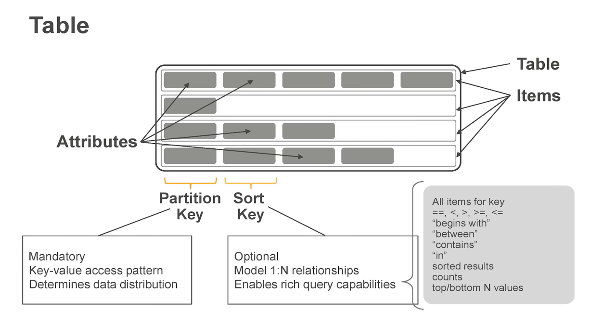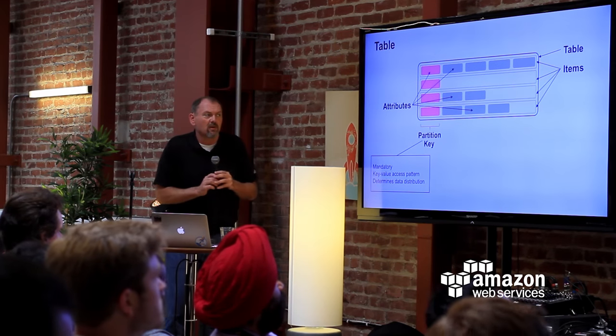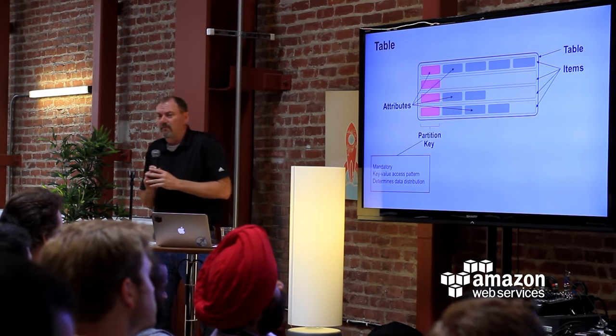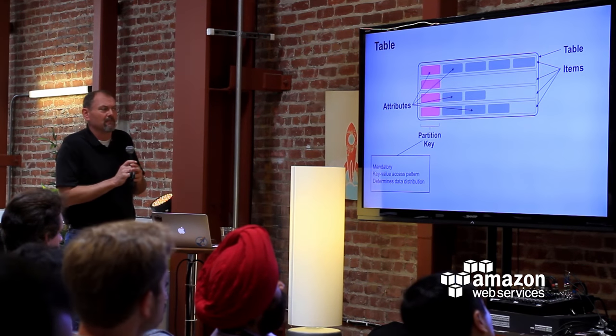DynamoDB is a backplane service — always there, always on. How do you deploy it? You log into the console, create a table, tell it how much capacity you want, and that's it. No deploying instances, no installing or updating software, no configuring things. Table structure is simple: tables have items, items can have attributes, and attributes don't need to be consistent across items. There is one mandatory attribute called the partition key, which uniquely identifies the item.